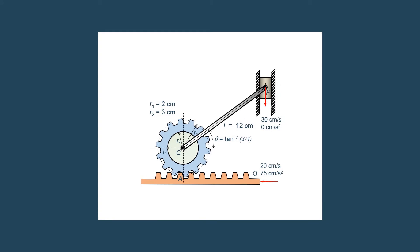This is the diagram. We have a gear with center G rolling on the gear rack Q. The gear rack Q is moving with a velocity of 20 cm per second to the left, and it has an acceleration of 75 cm per second squared in the same direction. The gear is connected through link GP to a slider that can move vertically. The velocity of slider P is directed downward with a magnitude of 30 cm per second and is constant, so it does not have acceleration. While slider P is moving down, the gear will be moving to the left, creating a general plane motion of the link GP.